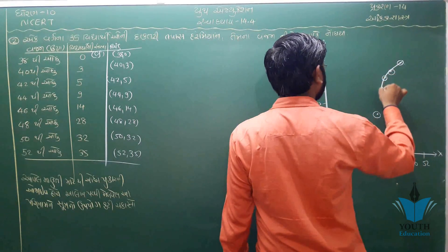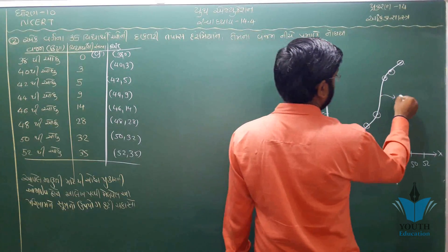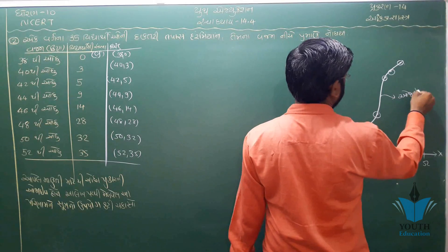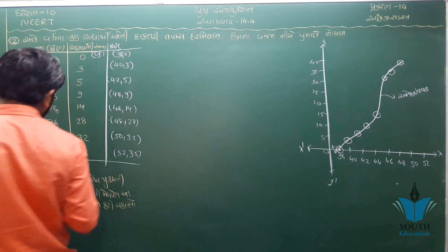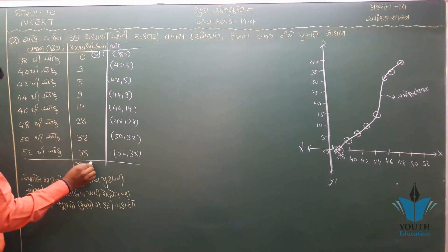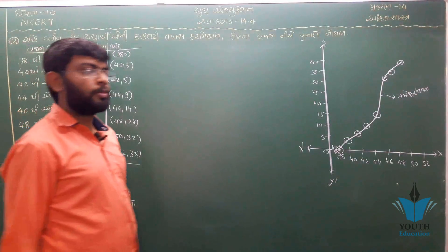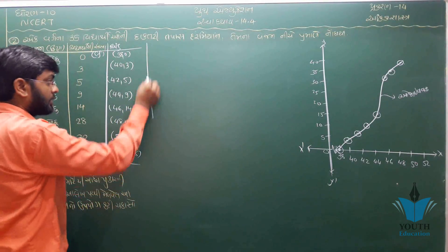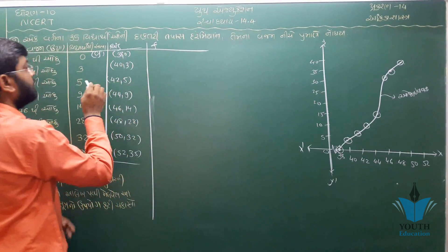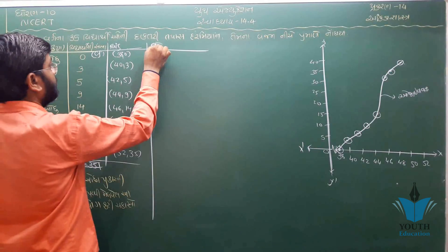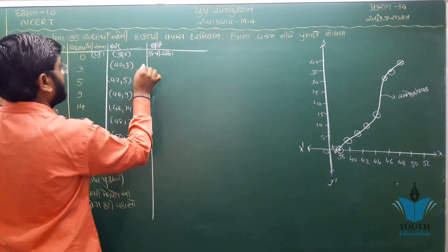તો આ રીતે આલેખ જોઈએ તો આ રીતે વક્ર (curve) 100 જેવો રૂપ લે છે. આ રીતે આ 'થી ઓછા' (less than) પ્રકારનો ઓજાઈ વક્ર (Ogive curve) તૈયાર થાય.